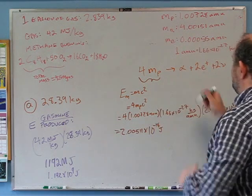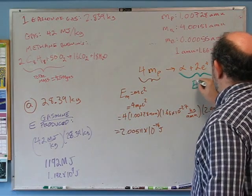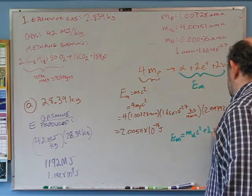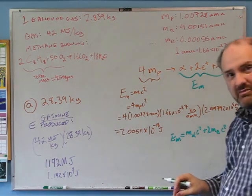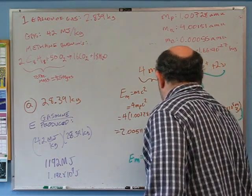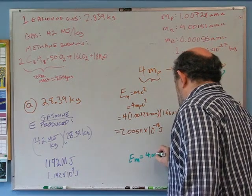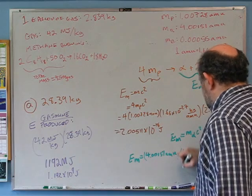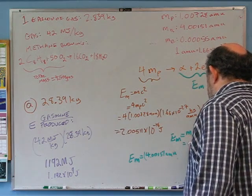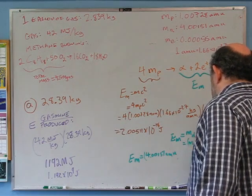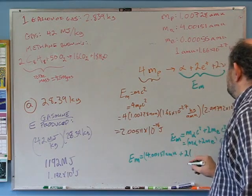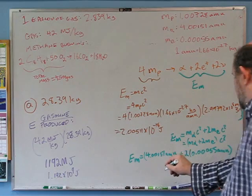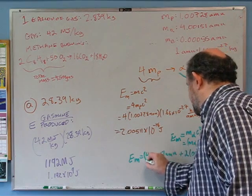On the right side, the energy in mass equals the mass of the alpha particle times c² plus 2 times the mass of the electron times c². The neutrino mass is negligible. So the right-side mass energy is (m_alpha + 2·m_e)·c² = (4.00151 + 2×0.00055) amu × 1.66×10⁻²⁷ kg/amu × c².